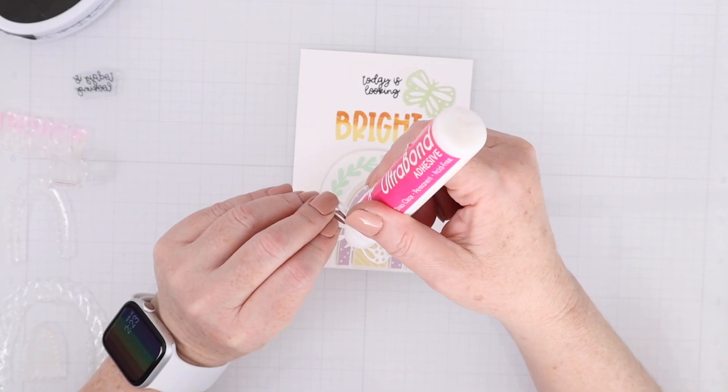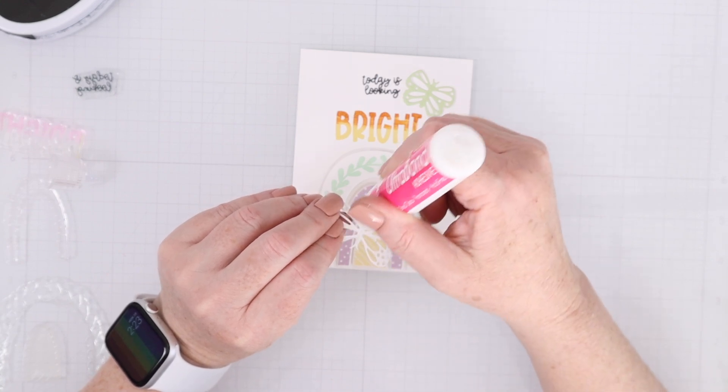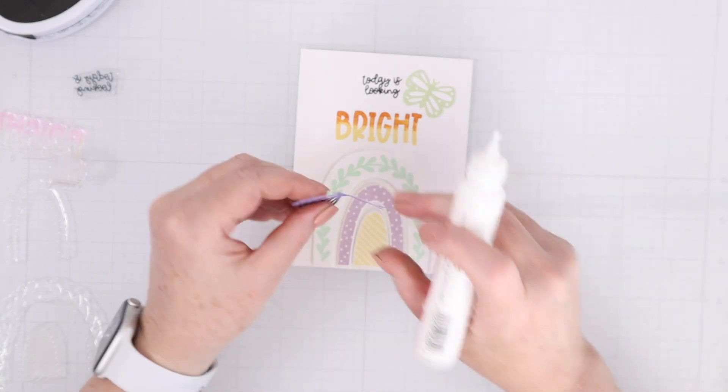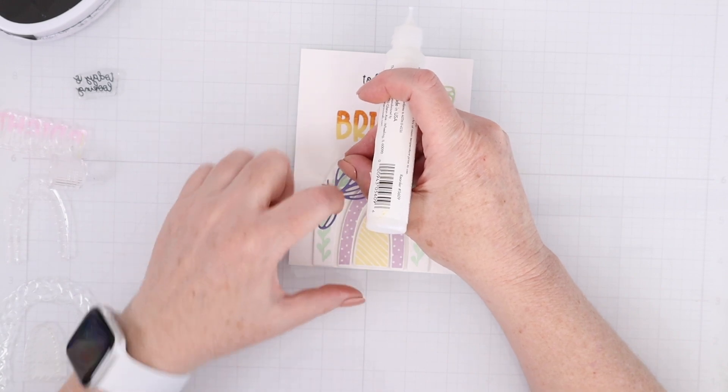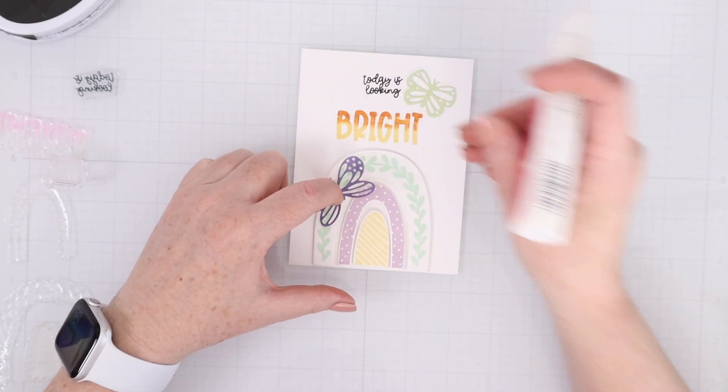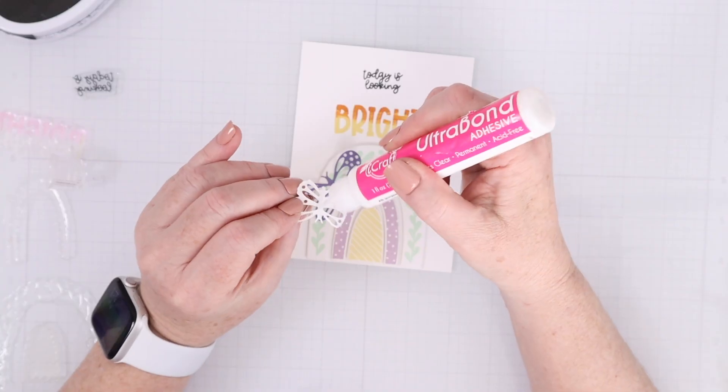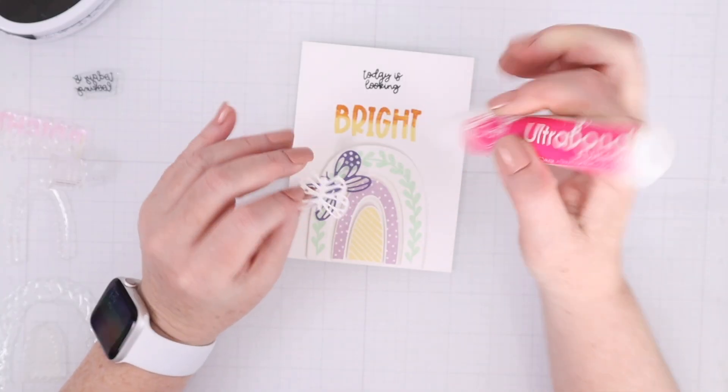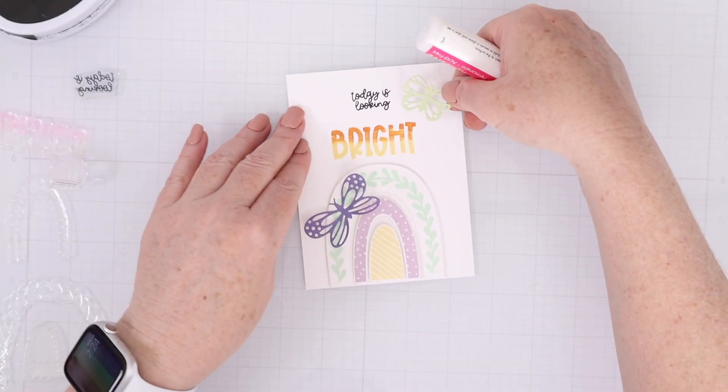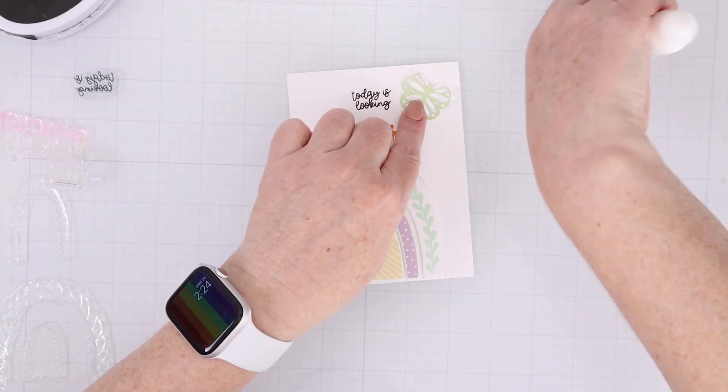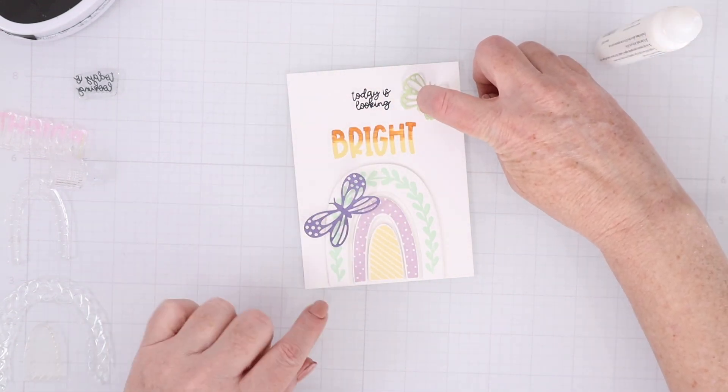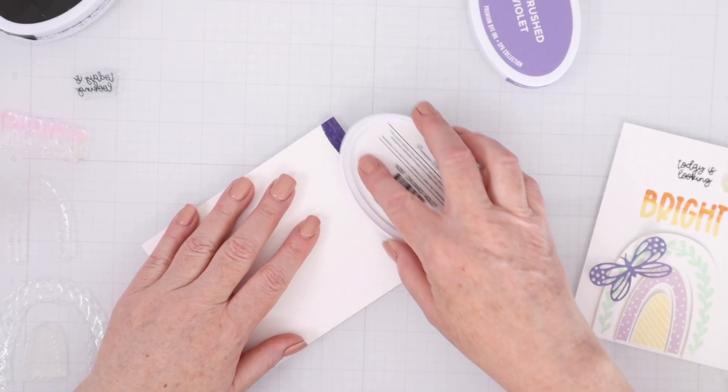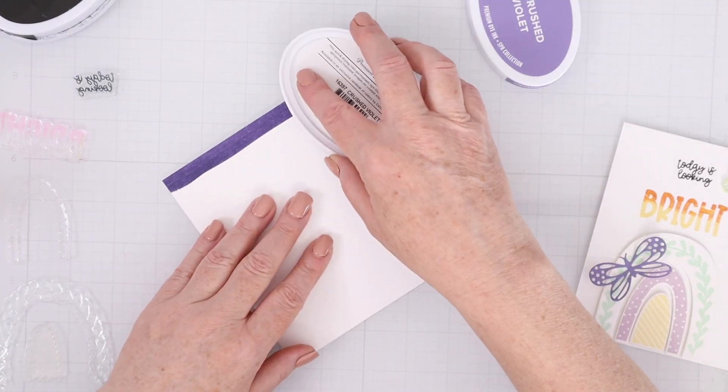For the butterflies, I'm going to add a little bit of liquid glue just on the bodies of the butterfly and hold that down until it's a little bit dry. And that will allow me to lift up those wings. I love dimensional-looking butterflies flying off the card; I think they're so cute. And these are beautiful and detailed, and you can get those matching colors by using your ink pads.